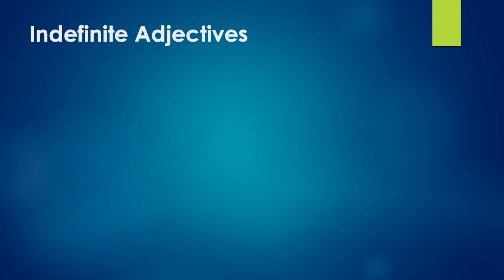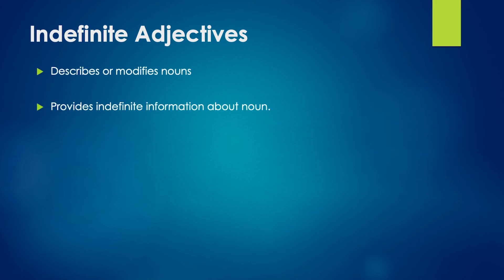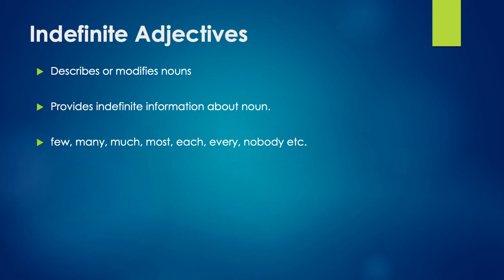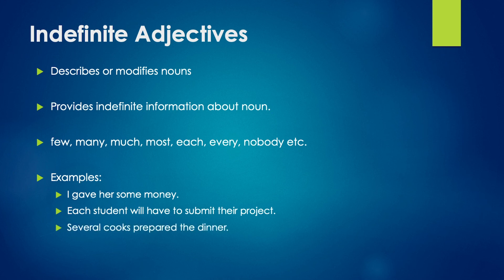An indefinite adjective describes or modifies a noun, providing indefinite information about it. Words like few, many, much, most, each, every, nobody, etc. are indefinite adjectives. For example, I gave her some money — the indefinite adjective is some. Each student will have to submit their project — the indefinite adjective is each. Similarly, several cooks prepared the dinner — here, several is the indefinite adjective.